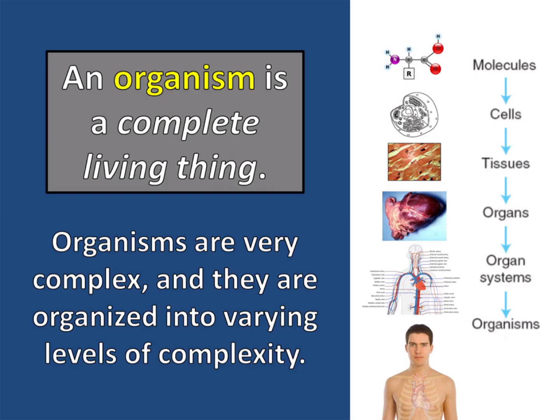An organism is a complete living thing. Organisms are very complex, and they are organized into varying levels of complexity. Those levels include cells, tissues, organs, and organ systems.